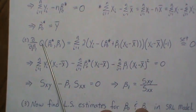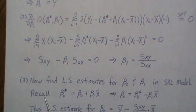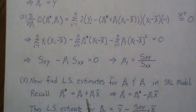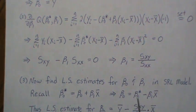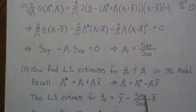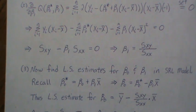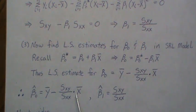We solved for beta-1-hat and beta-0-star-hat. To recover beta-0-hat from the original (uncentered) model, recall beta-0-star = beta-0 + beta-1 * x-bar, so beta-0-hat = beta-0-star-hat minus beta-1-hat * x-bar = y-bar minus (Sxy/Sxx) * x-bar.